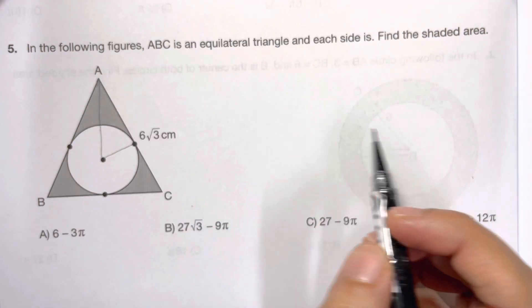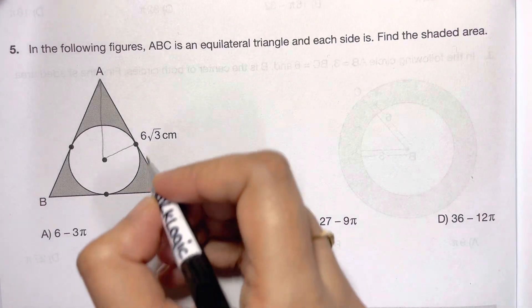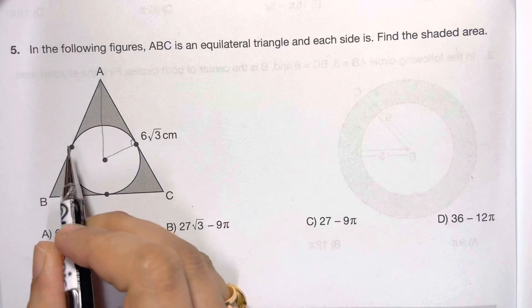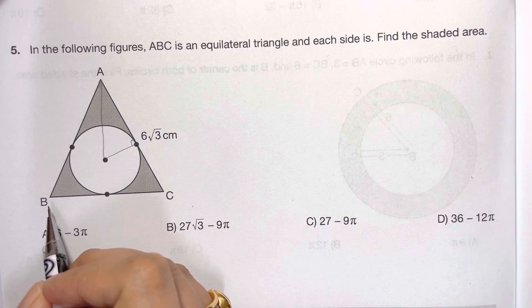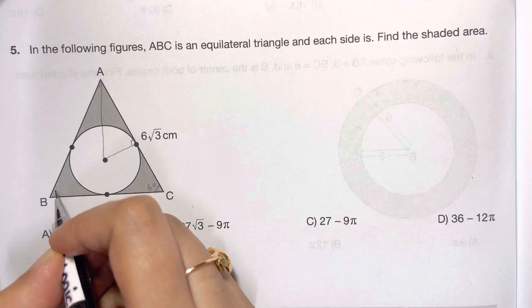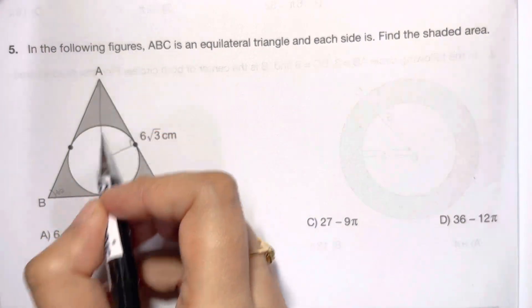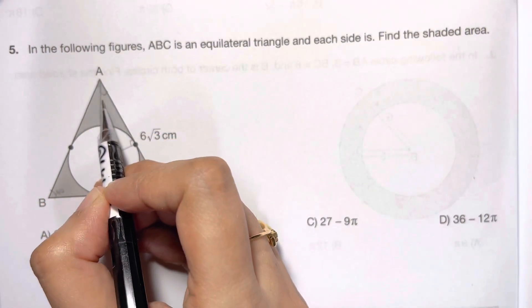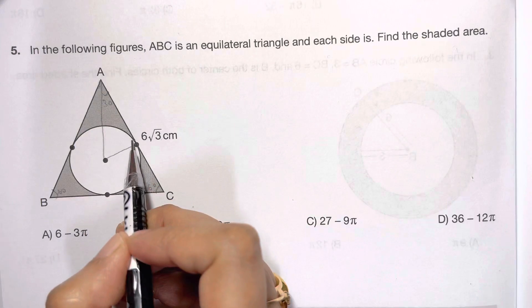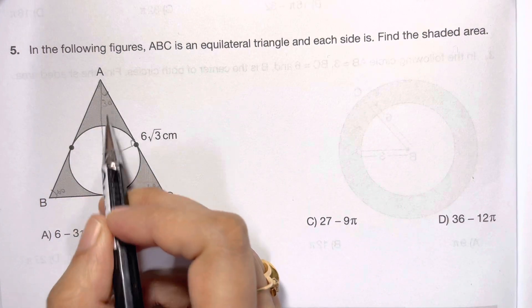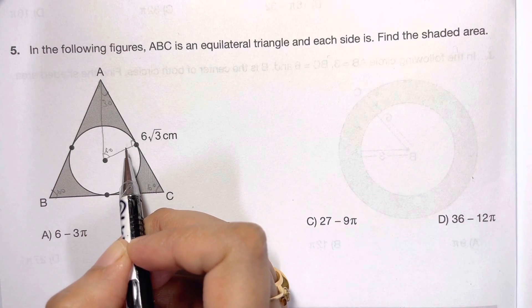Now what can we see? We can see a right angle triangle. Here we have the right angle, and the equilateral triangle has all angles equal. This is 60°, this is 60°, so this is also 60°. And this 60° is divided into half, so this is 30°.